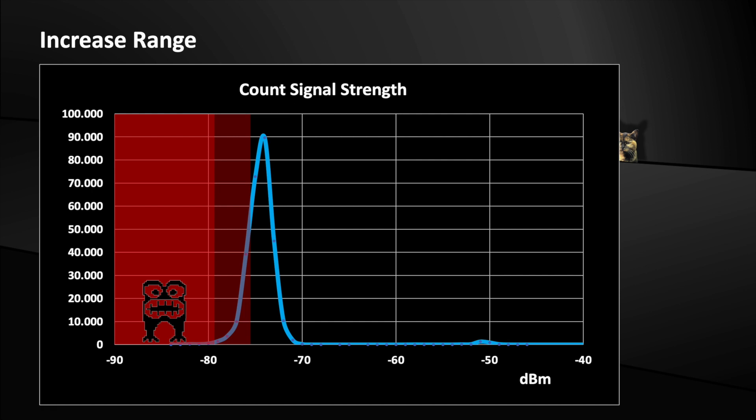Another method is to use multiple receivers in parallel. When the signals are added, the voltage amplitude of the signal increases, while the noise is only added up statistically. As a result, the blue signal curve shifts faster to the right than the red area, which is defined by the noise. The method becomes really clever, when for example, 1000 receivers are integrated on one chip. This can increase the sensitivity by a factor of almost 1000, which corresponds to 30 dB improvement.